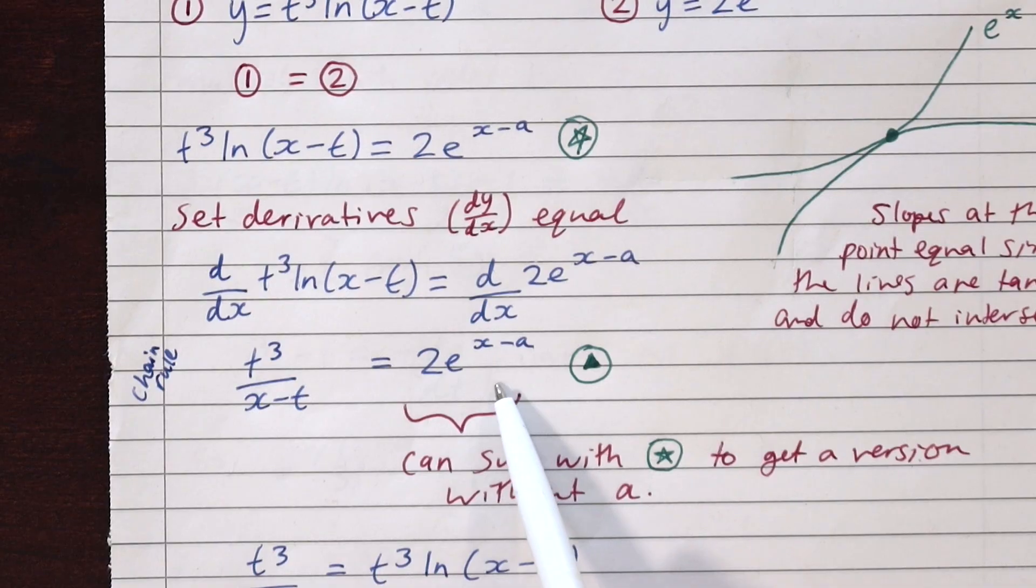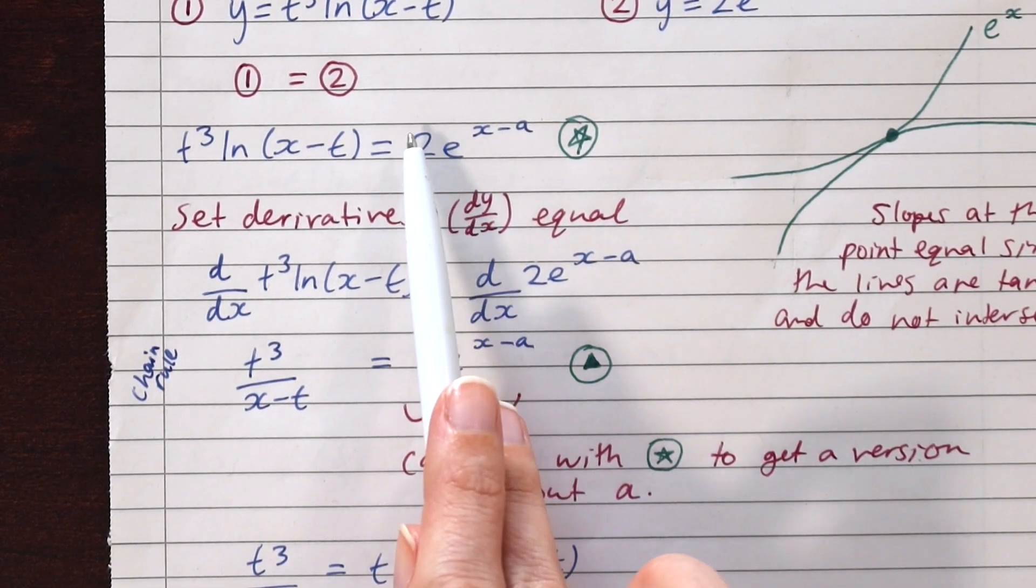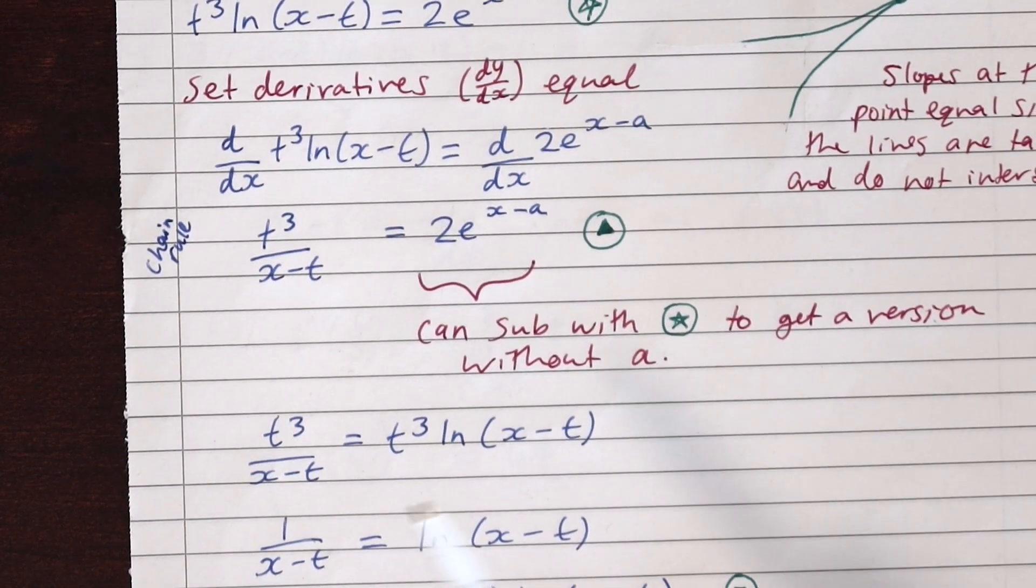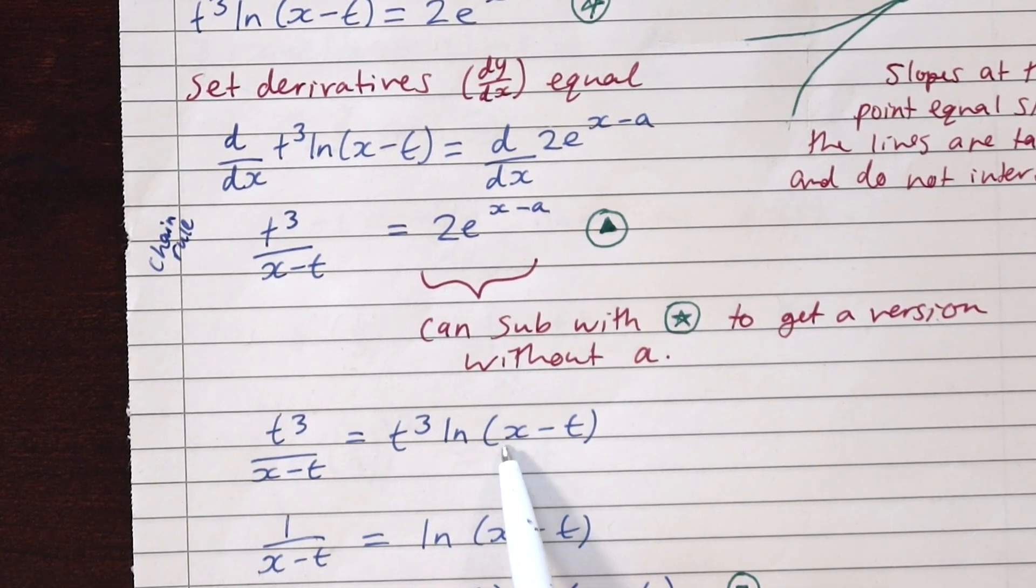Noticing that our right hand side hasn't changed during this process, we can replace it with the definition we had for it earlier, giving us a version without any a and just t's and x's, which can simplify down to give us that all of this is equal to one.